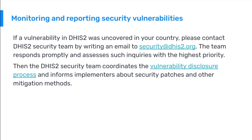If a vulnerability in the DHIS2 system is not covered in your country, please contact the DHIS2 security team by writing an email to security@dhis2.org. The team responds promptly and treats such inquiries with the highest priority. The DHIS2 security team coordinates the vulnerability discussion process and informs implementers about security patches and other mitigation methods.